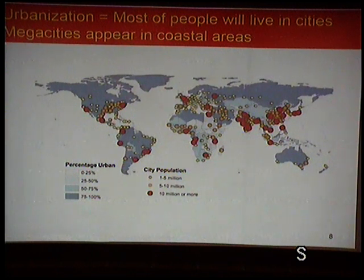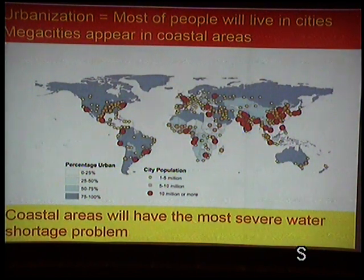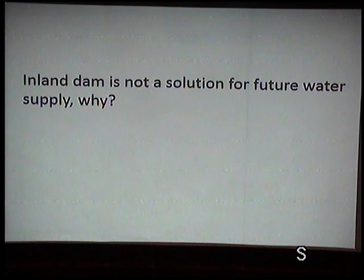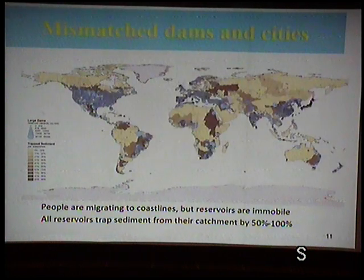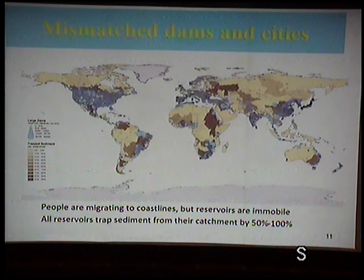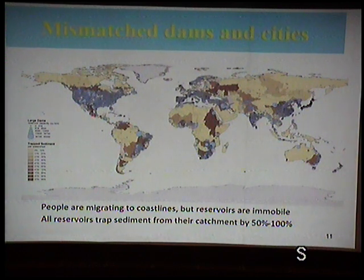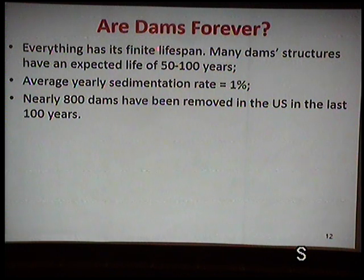Mega cities appear in coastal areas, so your grandchildren will live there and need coastal water supply. Existing dams are uniformly distributed on land, but they mismatch the coastal mega cities. Furthermore, dams have a lifespan — normally 50 to 100 years for structures — even if the concrete is strong for 1,000 years.